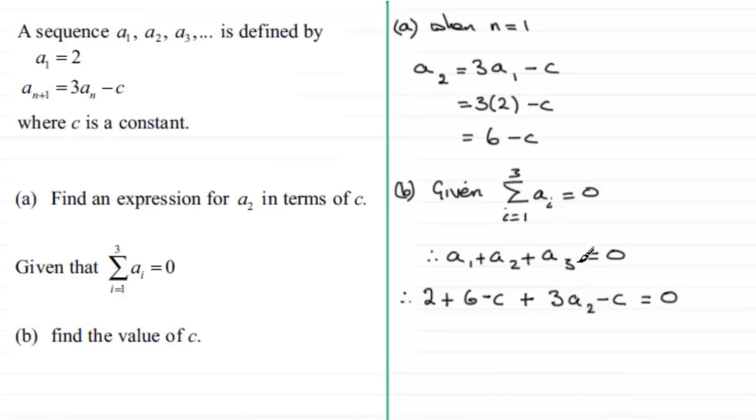We know a₂ is 6 - c from earlier, so we can substitute that in. Therefore, 2 + (6 - c) + 3(6 - c) - c = 0. Expanding out the brackets: